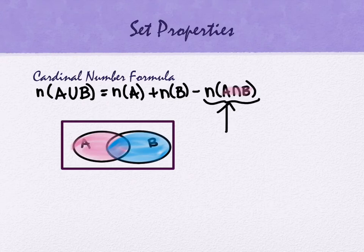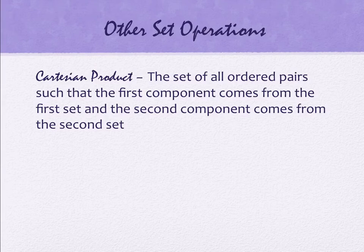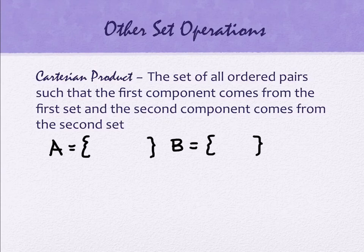There is one more type of set operation, and it's called a Cartesian product. So we'll do this notation, and then we'll stop for today. The Cartesian product is the set of all ordered pairs, such that the first component comes from the first set, and the second component comes from the second set. Set A is the letters X, Y, Z.